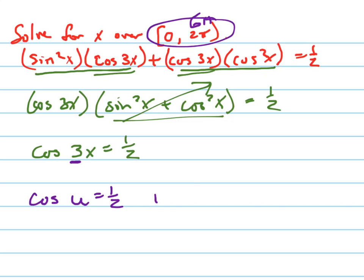So, u equals π over 3, 5π over 3, but now add 2π to both of these, and then add 4π to both of them. That's 3 times around the unit circle. Why am I doing that? You're going to see in just a second.